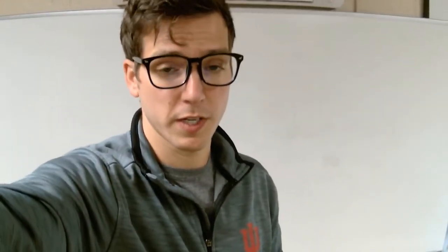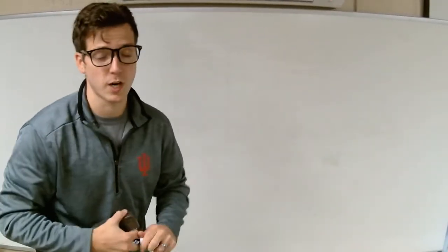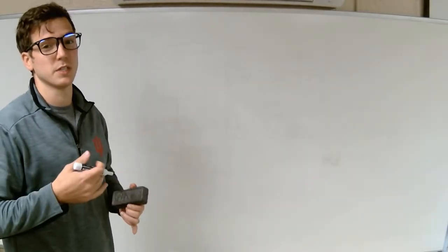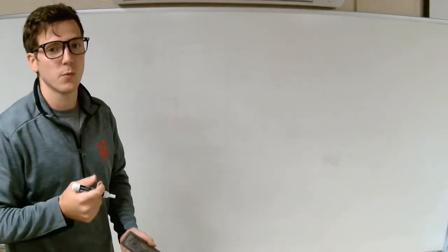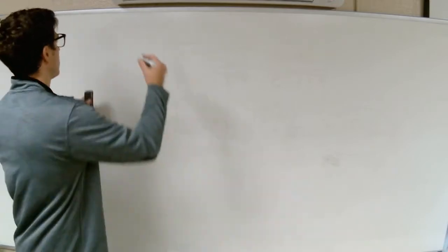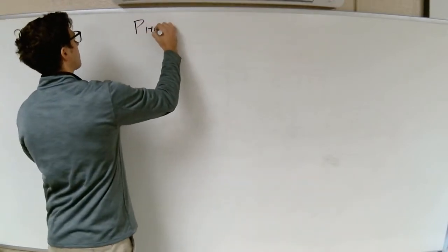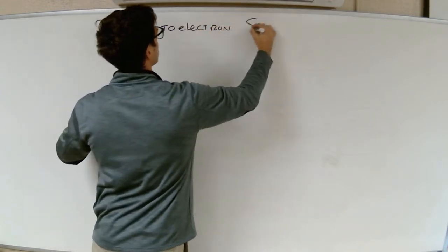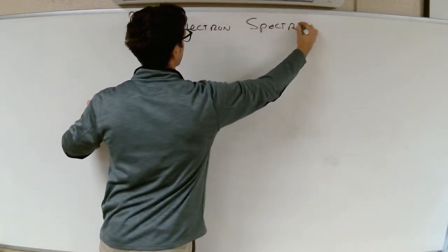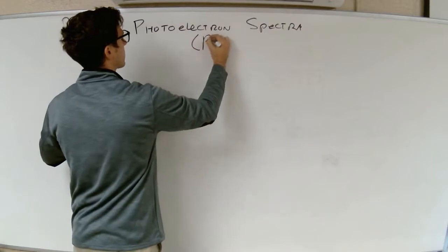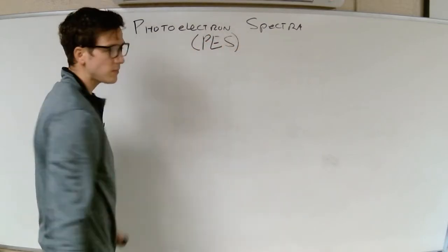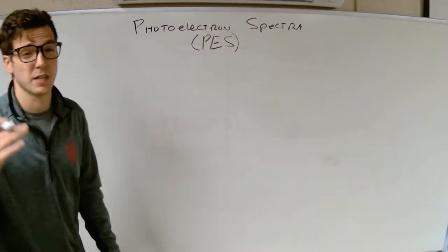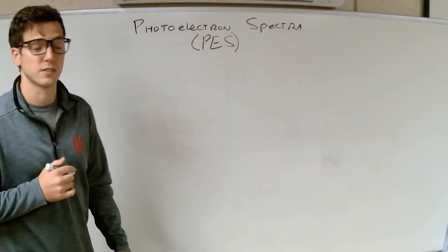Hey everyone, so today what we're talking about is photoelectron spectra, which is kind of like mass spec, but instead of dealing with isotopes and neutrons, we're dealing with electrons. So this is called photoelectron spectra, or they'll just call it PES. And you'll see this a lot on the AP exam. They love showing you guys this stuff.